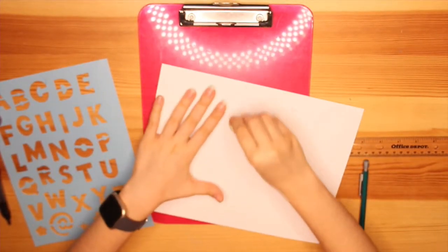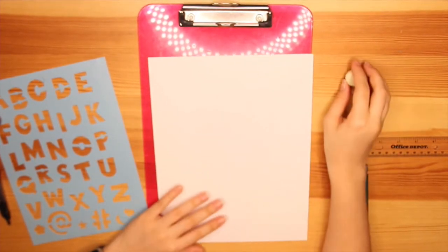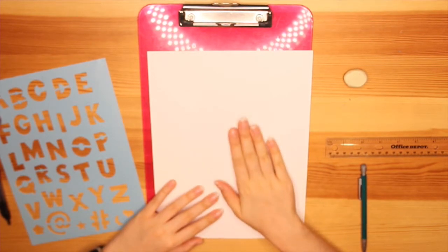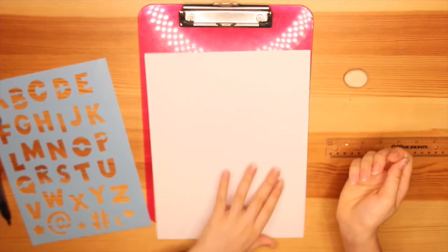If you drew any guidelines, go ahead and erase those now. Don't be too worried if you have some lines left, especially if you're going to be tracing it later. That way, once you trace it, you can really go ahead and erase everything.